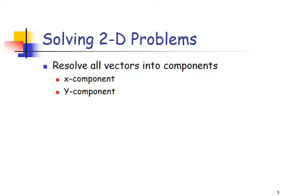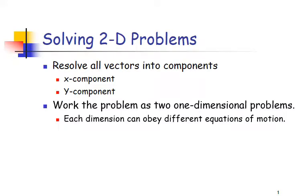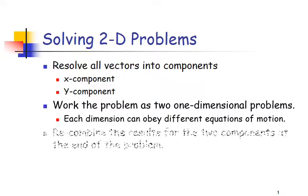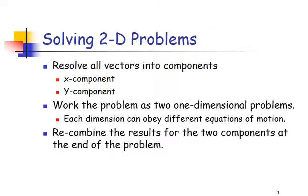When solving motion in two dimensions, it's important to track the velocity in X and Y separately, looking at both components. What we do is work the problem as two one-dimensional problems, because each can obey different equations of motion, and then we recombine them to get a result.